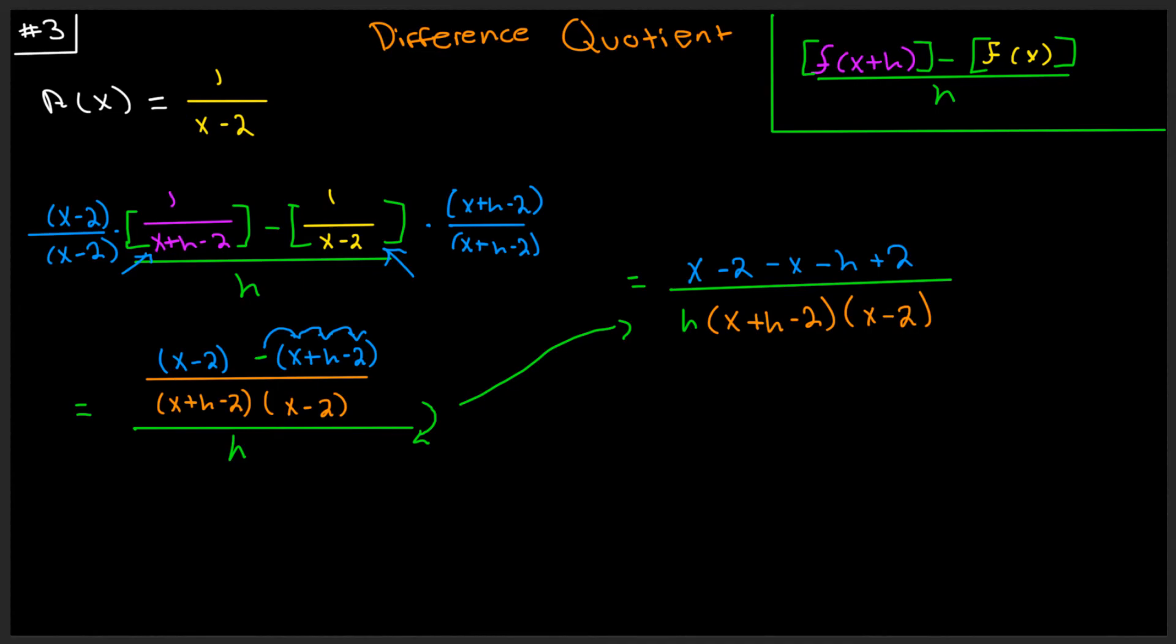So this is where our problem has gone. Hopefully you can recognize that, oh look, positive x will cancel out with negative x. Negative two will cancel out with positive two. And what you're left with is negative h.